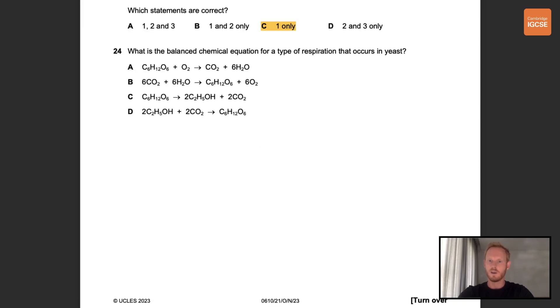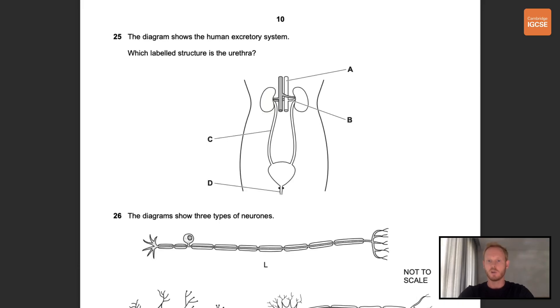Number 24. What is the balanced chemical equation for a type of respiration that occurs in yeast? Okay, so the balanced chemical equation for anaerobic respiration in yeast is C. C6H12O6, that's glucose, releases 2C2H5OH, that's 2 ethanol molecules, and 2CO2.